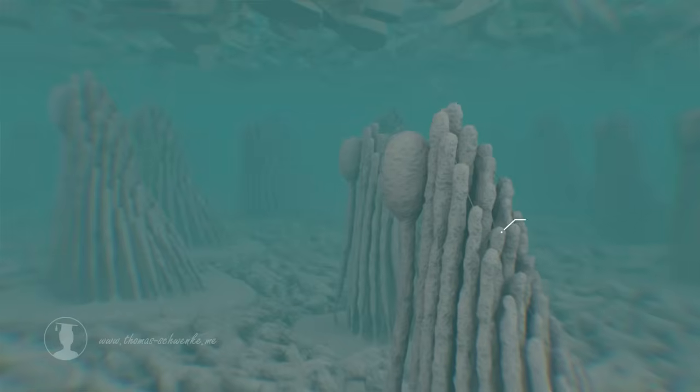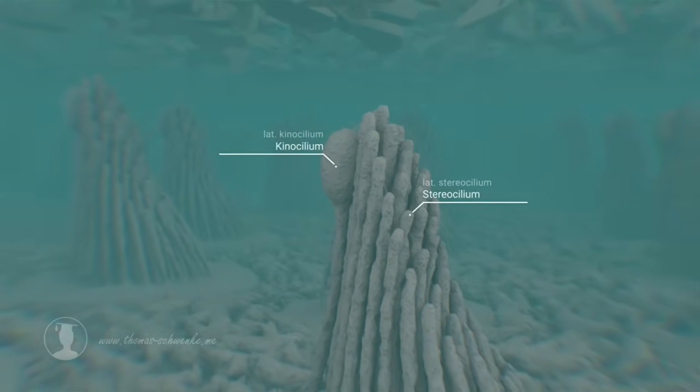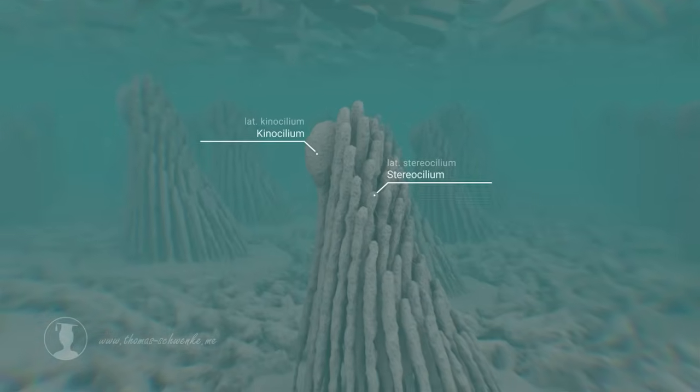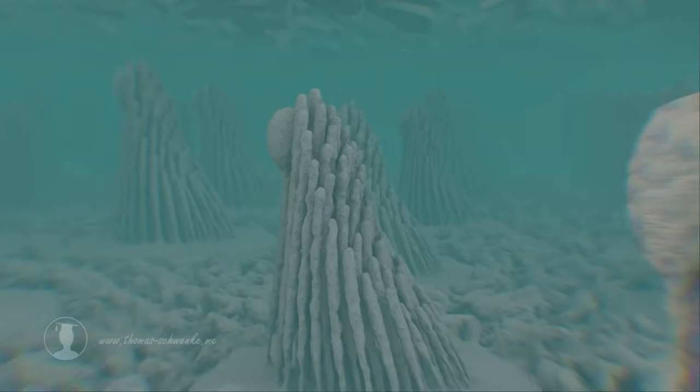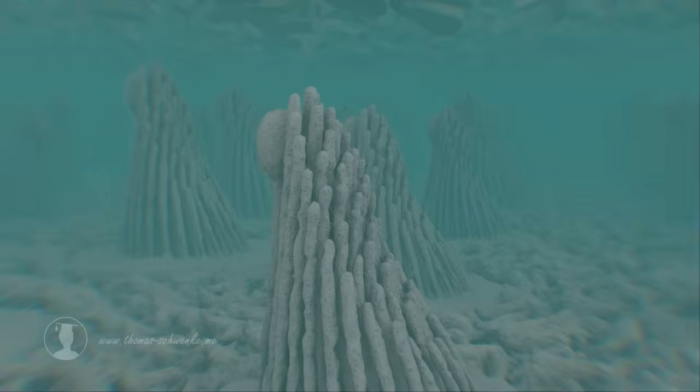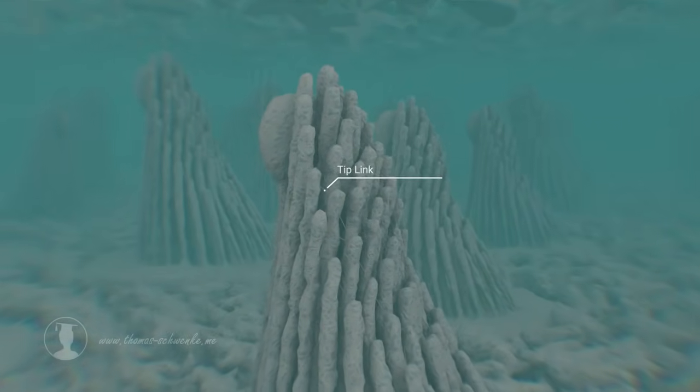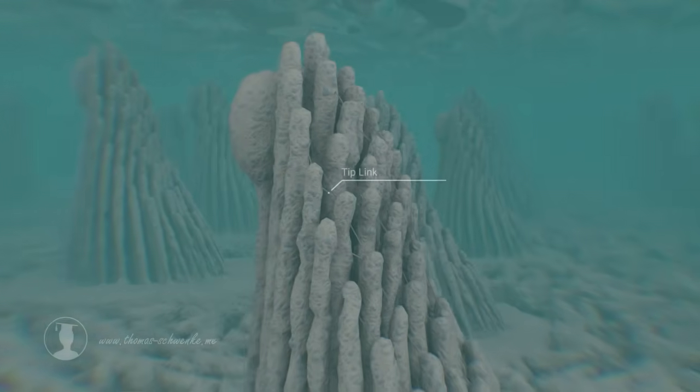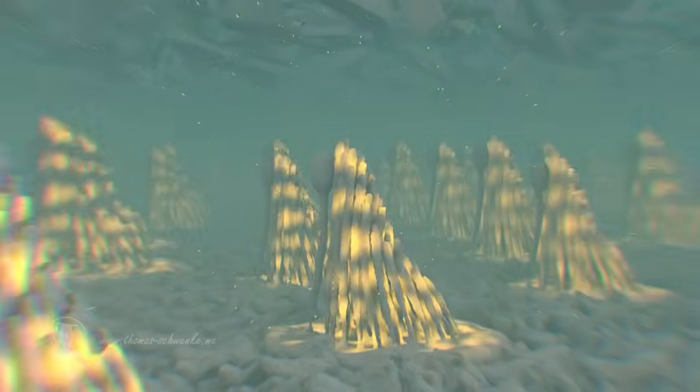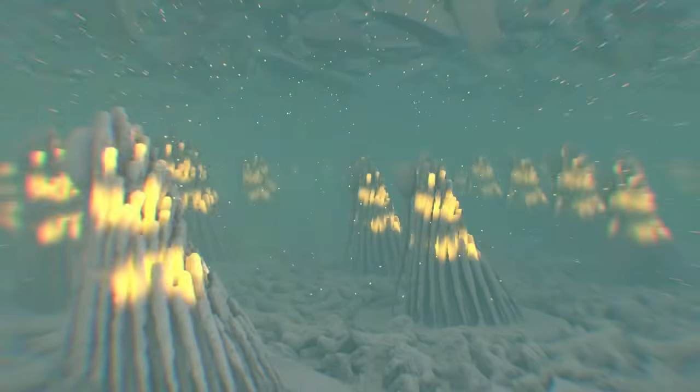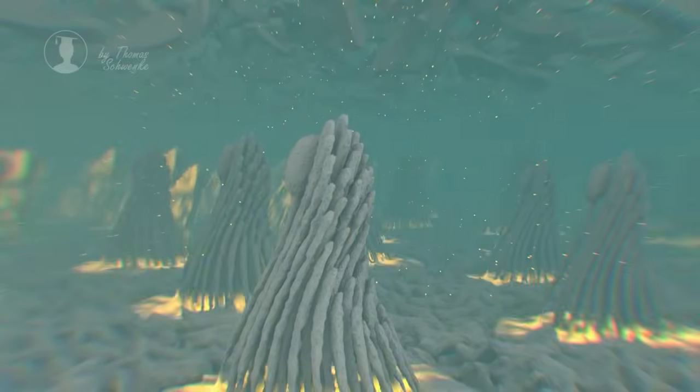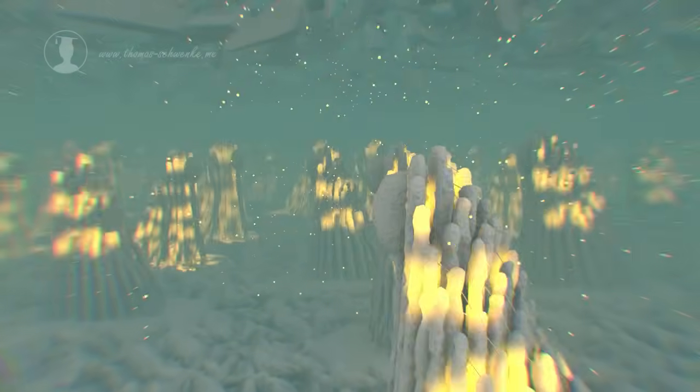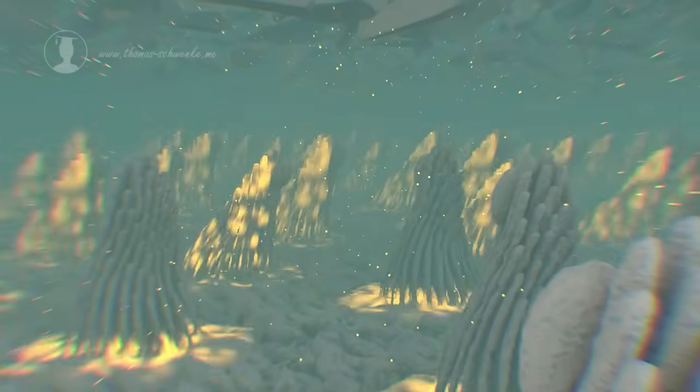Each hair cell has about 70 stereocilia and an additional kinocilium. As we have already seen in the animation on the sense of hearing, the stereocilia have small tip links. When the stereocilia are pushed to the right, these small bands relax and close the ion channels. When the stereocilia are pushed to the left, the tip links stretch and open the channels. The influx of potassium ions from the surrounding fluid triggers a reaction within the hair cell, which generates electrical signals that are transmitted to the brain. More information on how tip links and ion channels work can be found in the first part of this series.